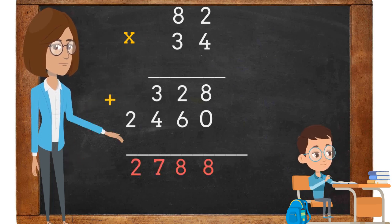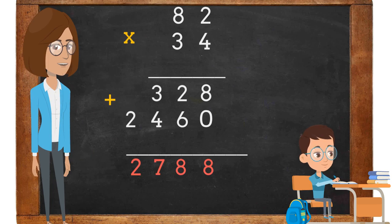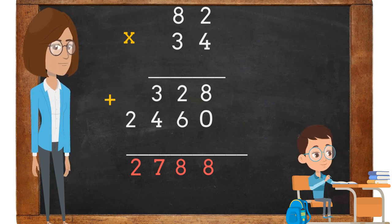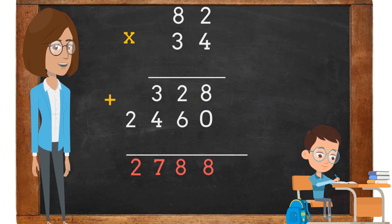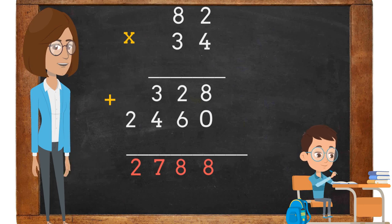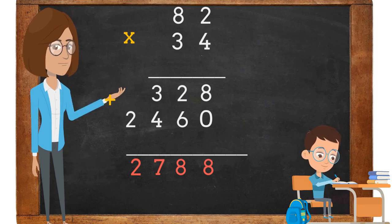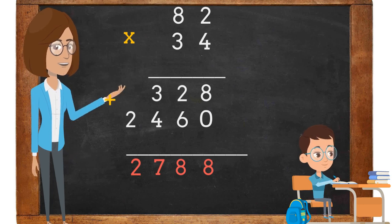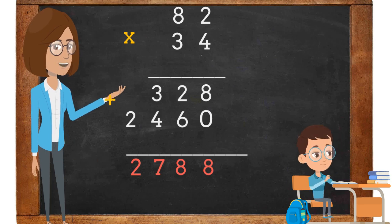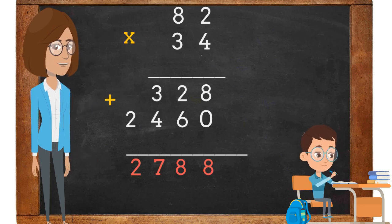Lastly, it is time to add. 8 plus 0 is 8. 2 plus 6 is 8. 3 plus 4 is 7. Since there is not a number above the number 2, we are going to bring the number 2 down. The product of 82 times 34 is 2,788.